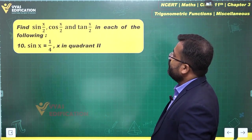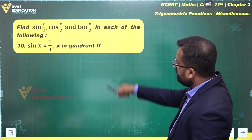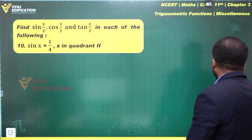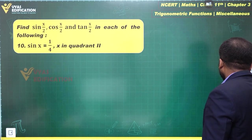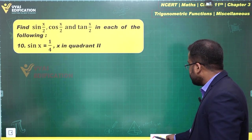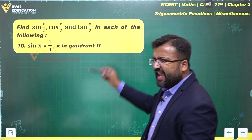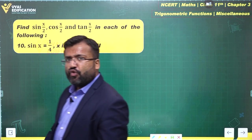Let's discuss this question. Find sin(x/2), cos(x/2), and tan(x/2), given that sin(x) = 1/4 and x lies in the second quadrant.